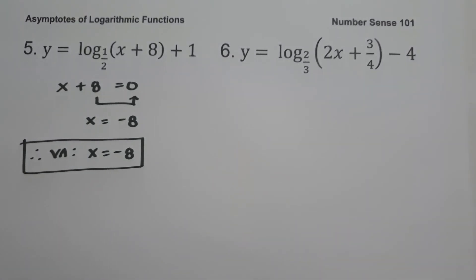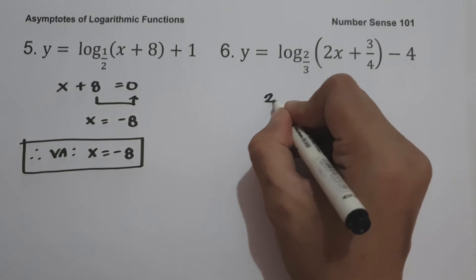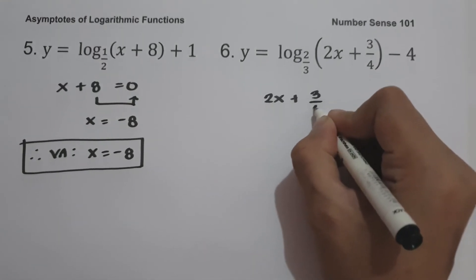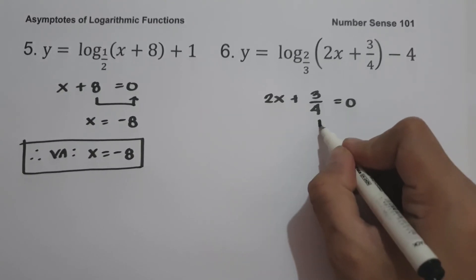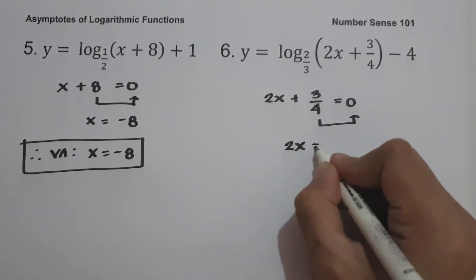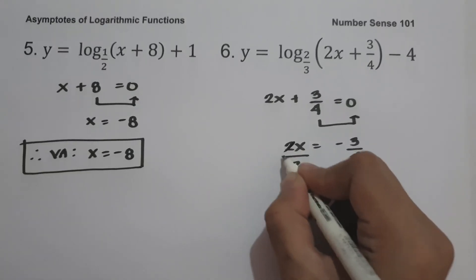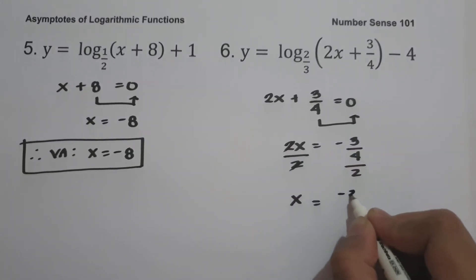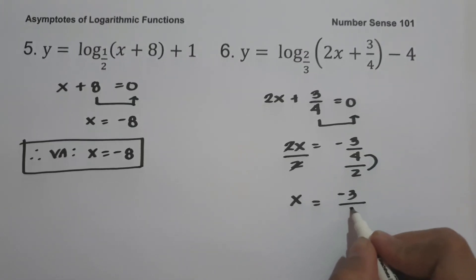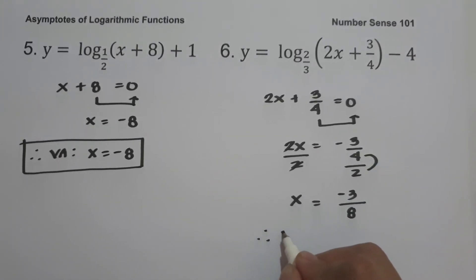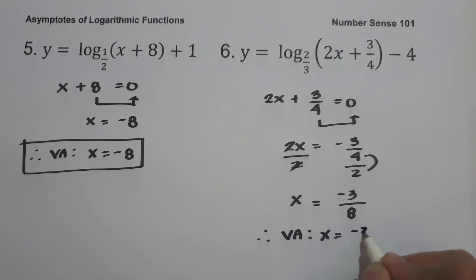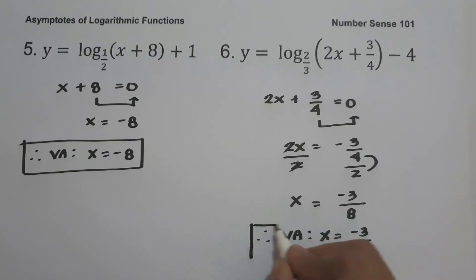On example number six: y equals log base 2/3 of (2x plus 3/4), minus 4. To find the vertical asymptote, let us equate the argument equal to zero. So we have 2x plus 3/4 equal to zero. Moving 3/4 to the other side gives us 2x equals negative 3/4. Dividing both sides by 2, we get x equals negative 3/8. Therefore, our vertical asymptote is x equals negative 3/8, and this will be our answer.